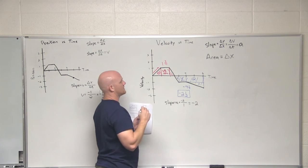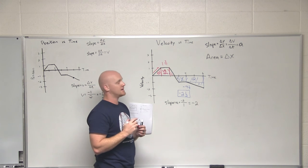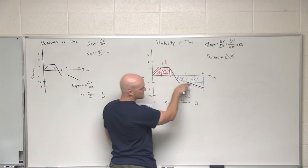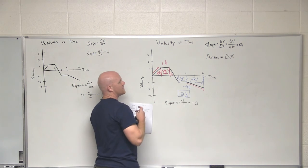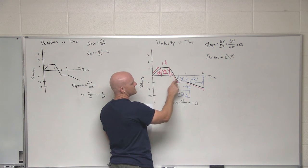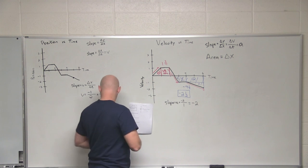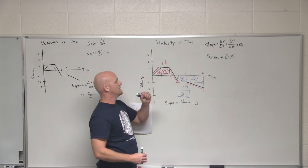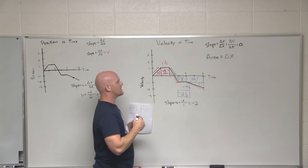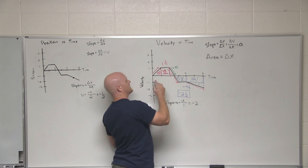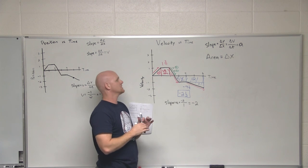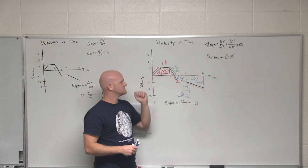Where are velocity and acceleration both negative? Definitely in this region: velocity is negative because we're below the axis, and the slope is negative, so acceleration is negative — speeding up in the reverse direction. Also in the second half of this other segment: below zero the velocity is negative, and the slope is downhill and also negative, so we're speeding up backwards there too. The only place we're slowing down is where velocity is positive — above the axis — but acceleration is negative due to a downhill slope. Opposite signs means slowing down.